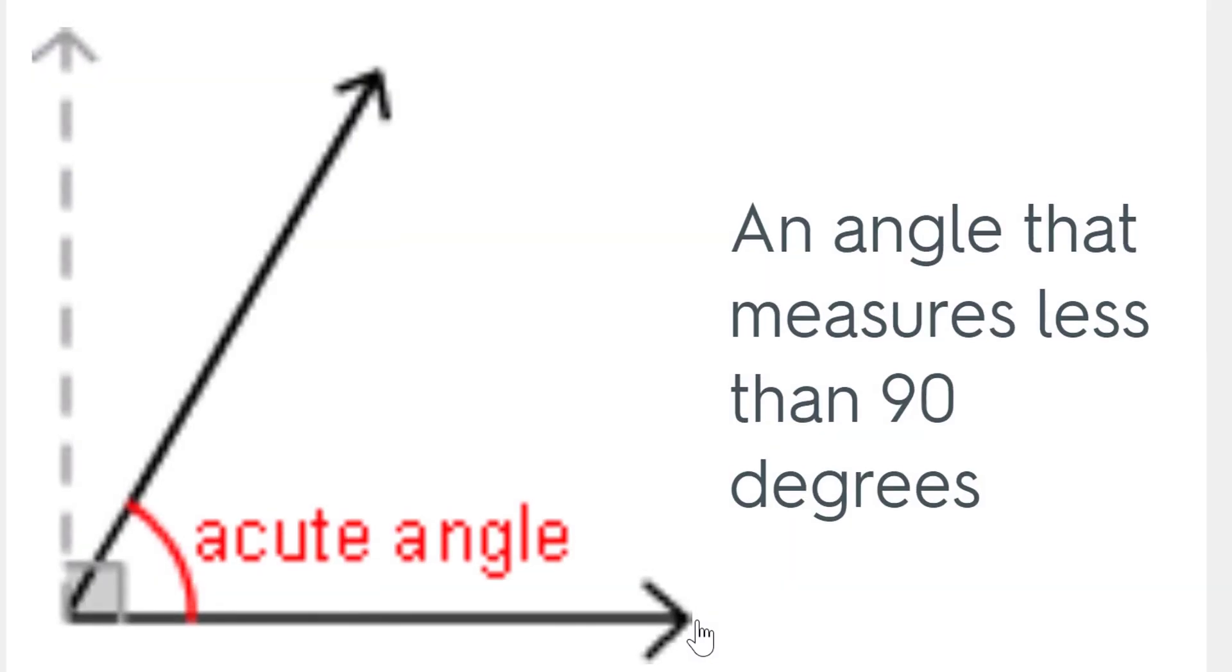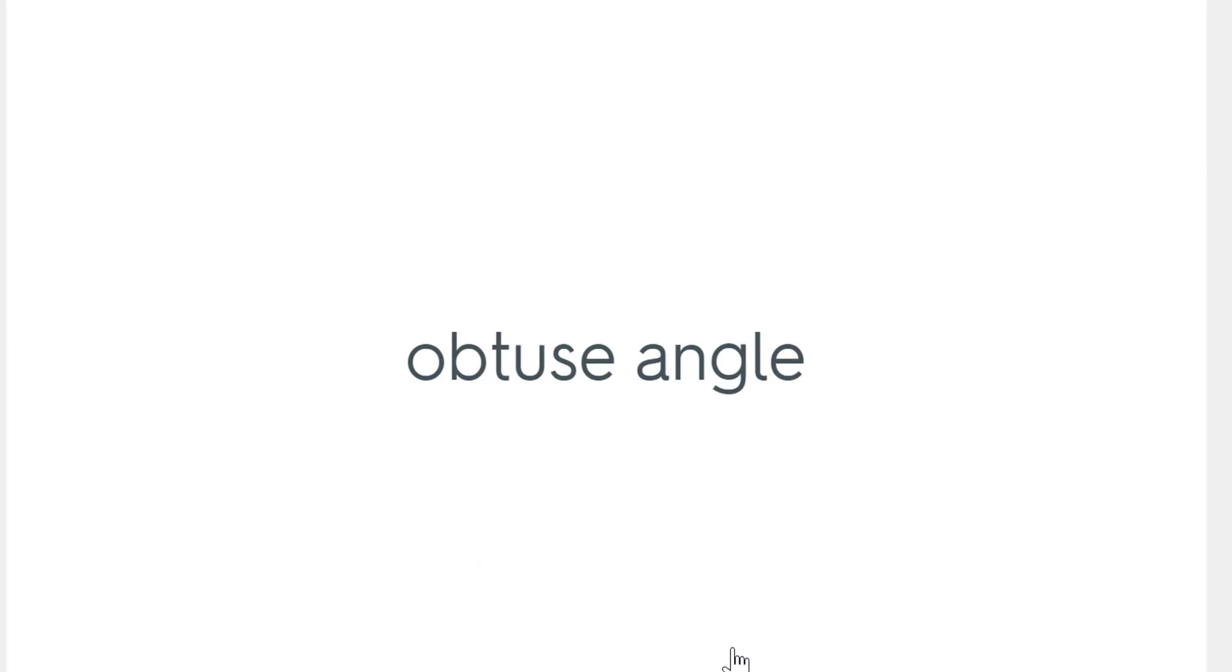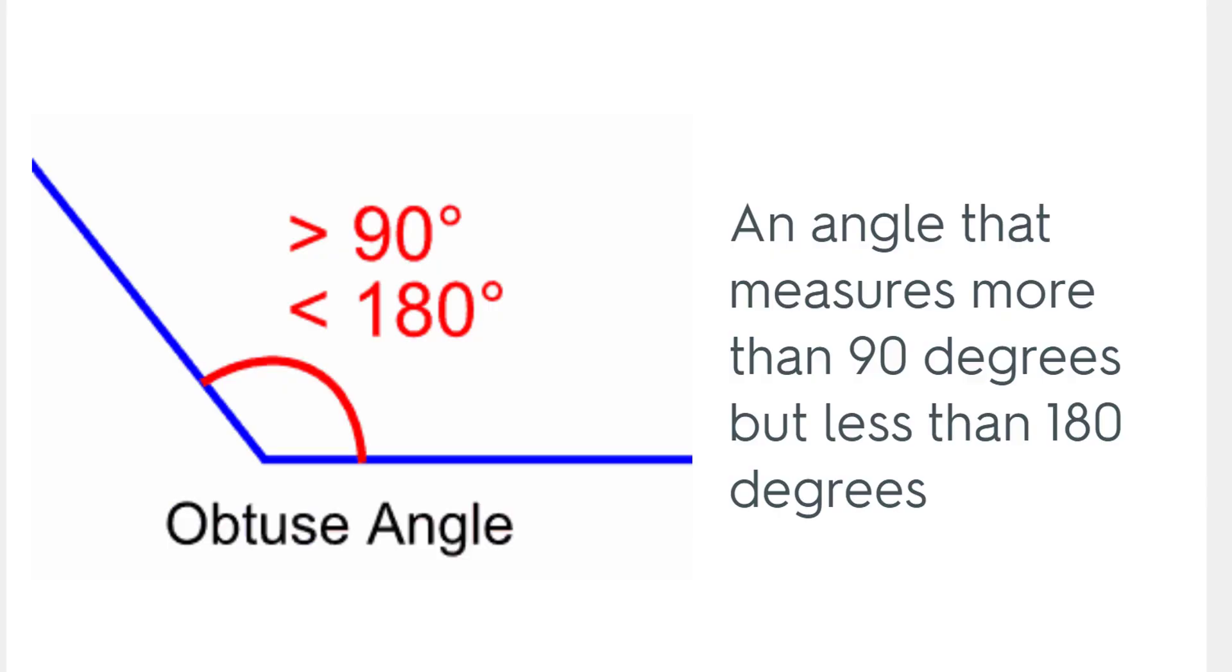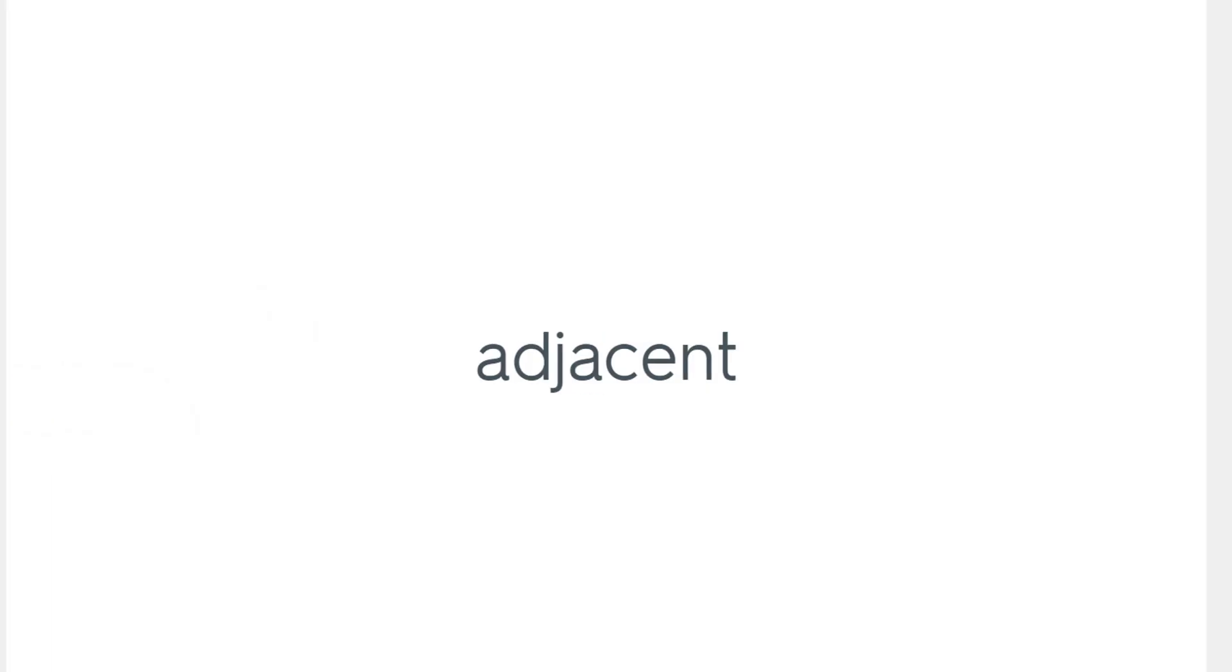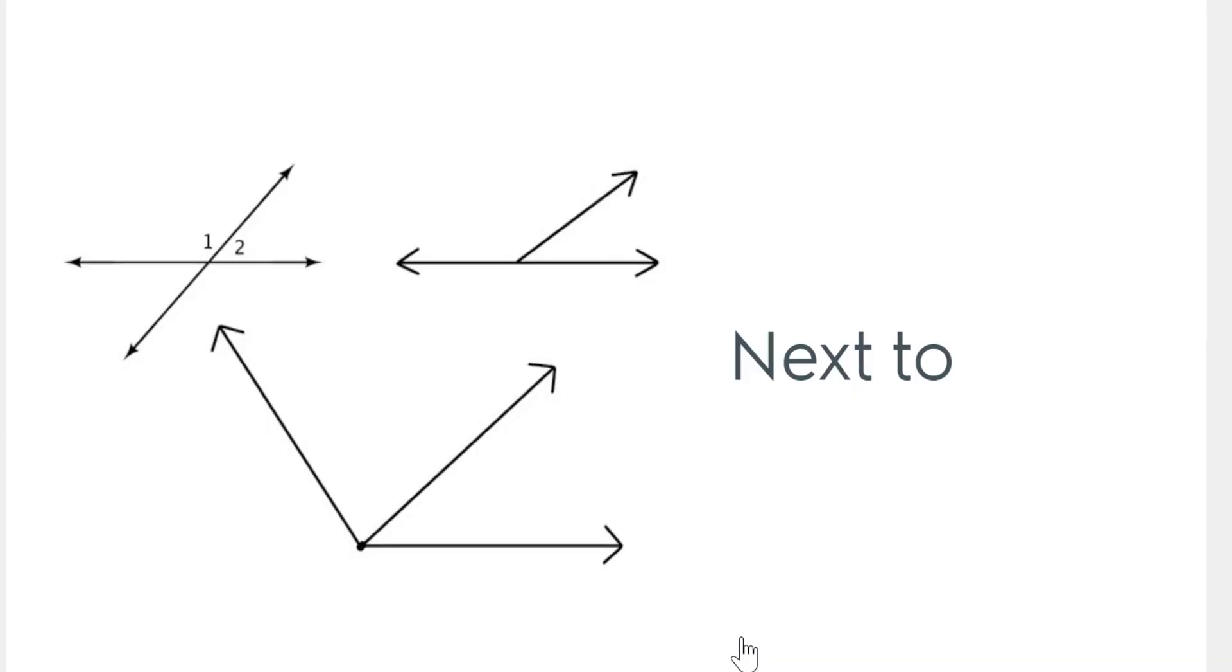We've got to know what an acute angle is. Acute angle is definitely less than 90, and we've got to notice that when our transversal intersects our parallel lines. Obtuse angle. It's greater than 90 degrees, but less than 180. We're going to see a lot of those. Angles that are next to each other are adjacent.